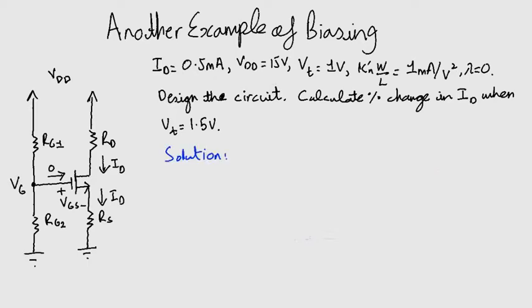As a rule of thumb, we choose RD and RS to provide one-third of the power supply voltage VDD as a drop across each of RD, the transistor, and RS.